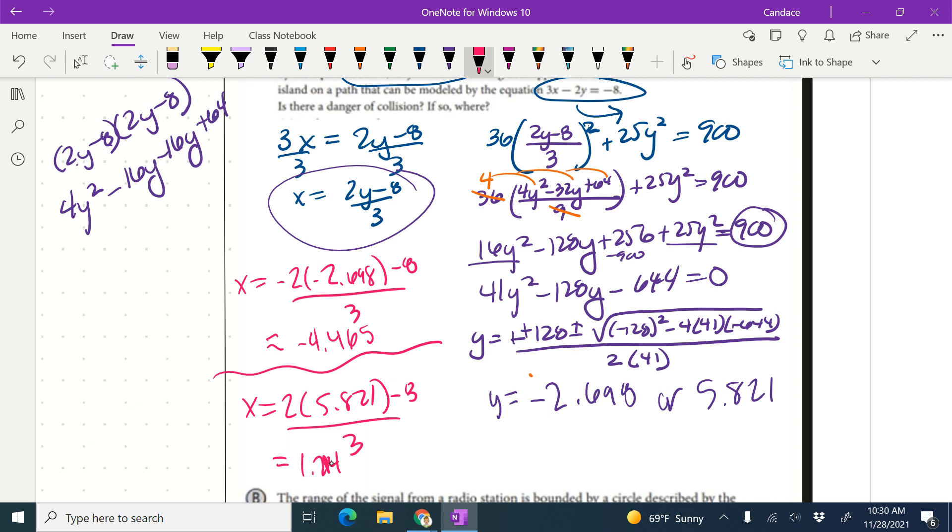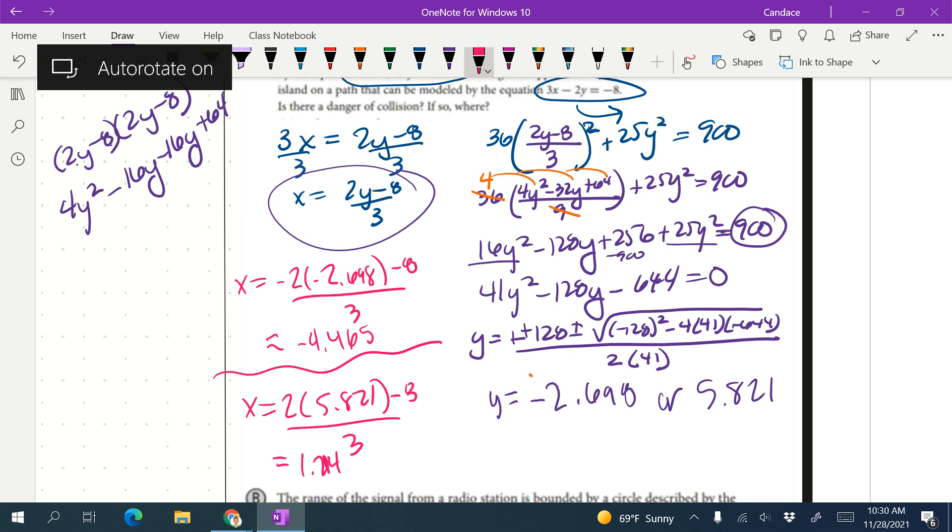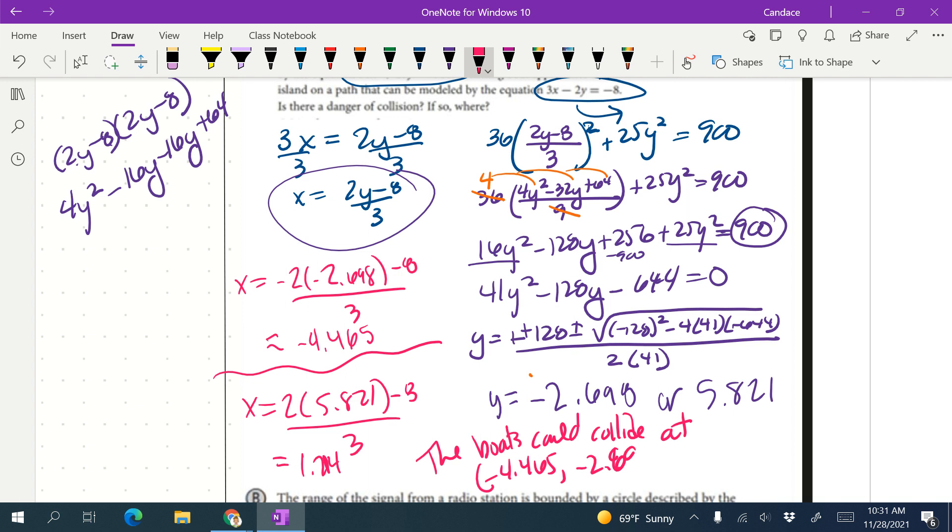So then my final answer is that the boats could collide at negative 4.465 comma negative 2.698, or at 1.214 comma 5.821. Your book looks like it's rounding to the tenth place. I always round to the hundredth place.